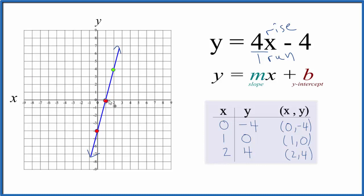Do it again. From that point, 1, 2, 3, 4 over 1. And you can see these points are on our line.